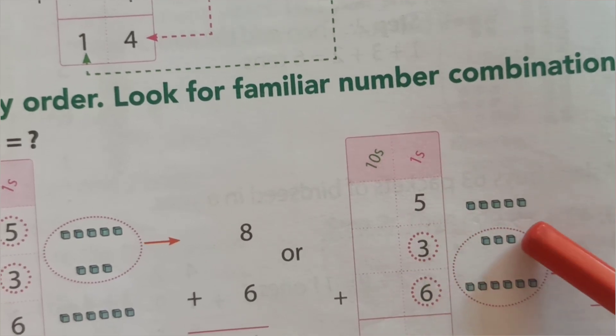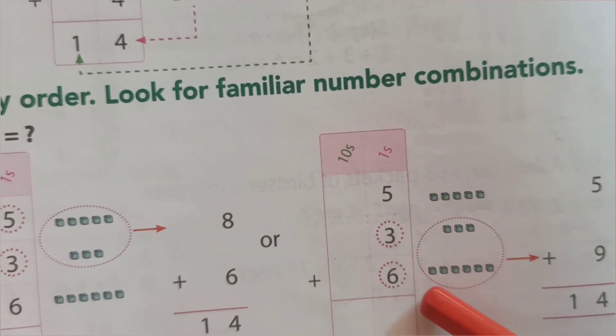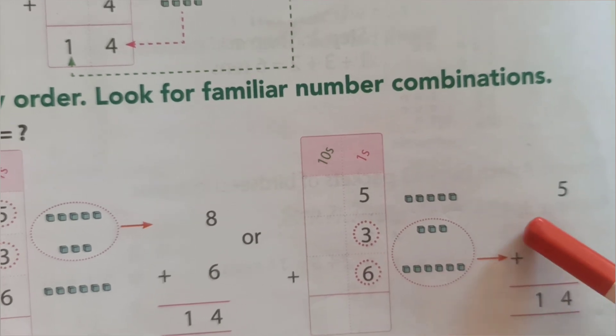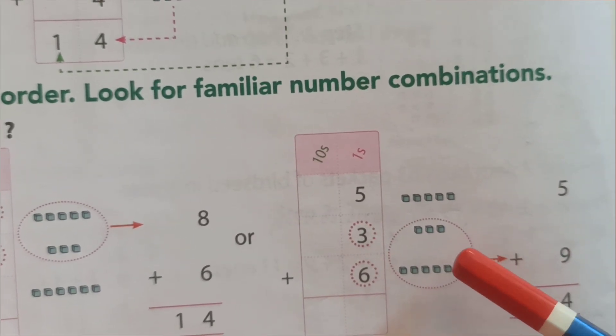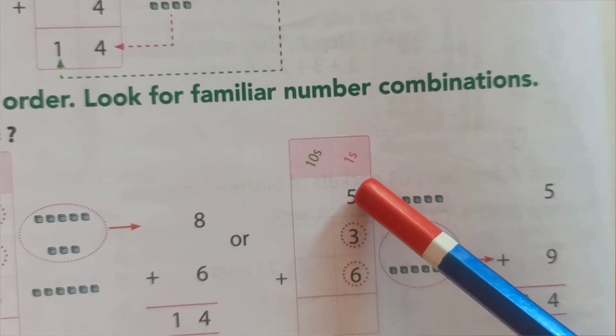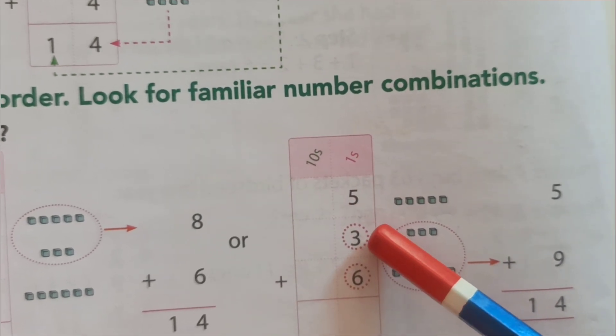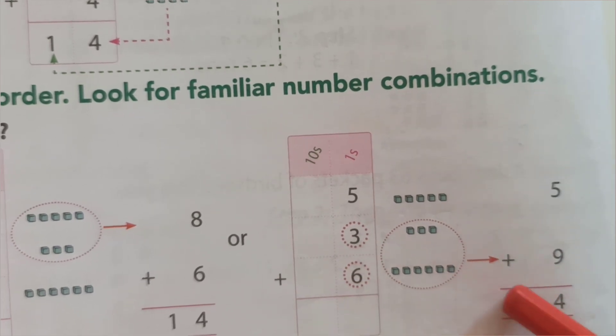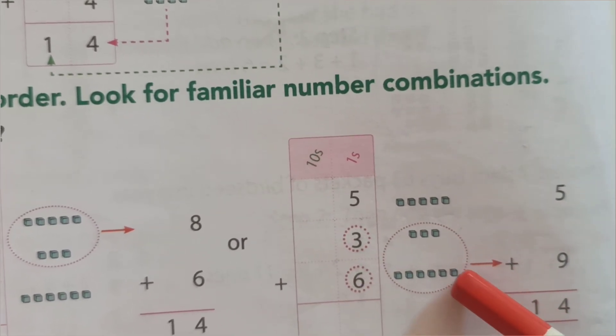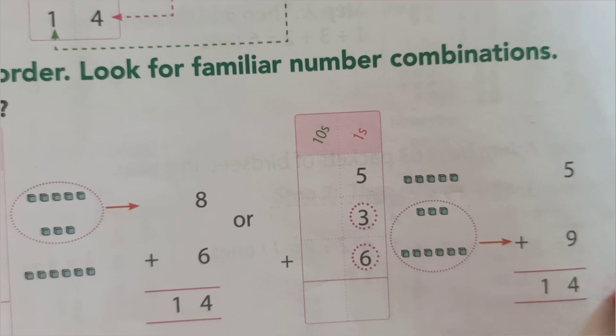5 plus 3 plus 6. If we add 5 plus 3 plus 6, 3 plus 6, 9 and 9 plus 5, 14.